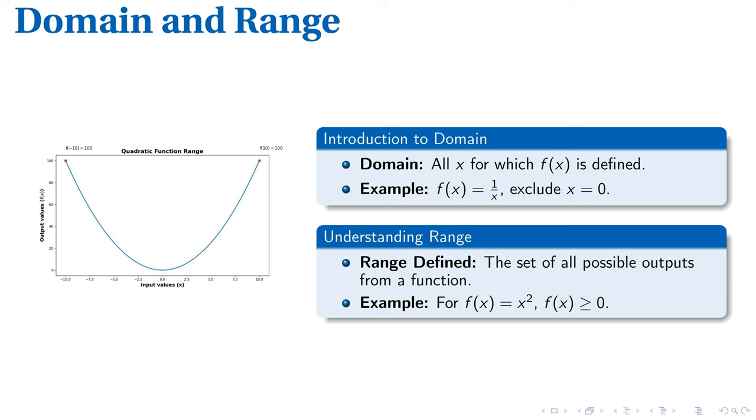On the flip side, let's consider the function f of x equals x squared. Here, the range, or the variety of possible output values, will always be greater than or equal to 0. Now, the connection between domain and range becomes clear.